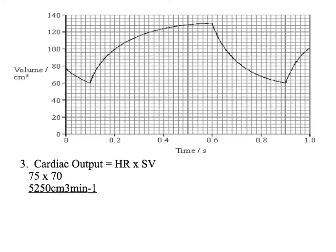From the previous two calculations, we've worked out our heart rate, which is 75, and our stroke volume, which is 70. So our final cardiac output is 5,250 centimetres cubed per minute.